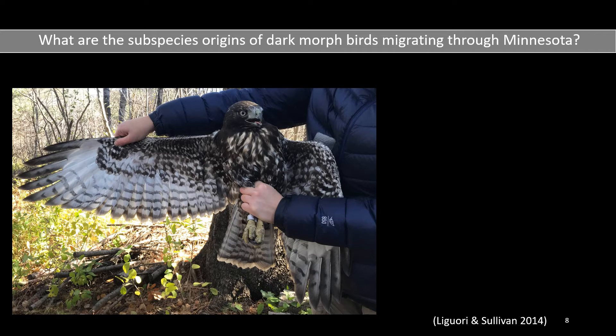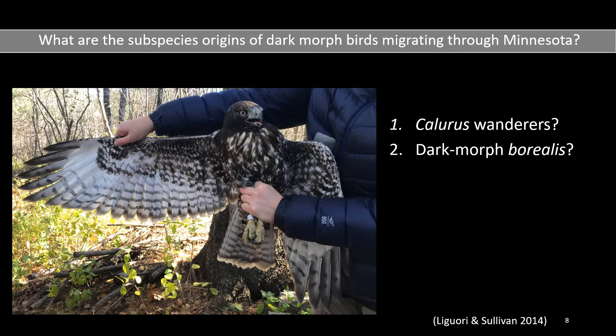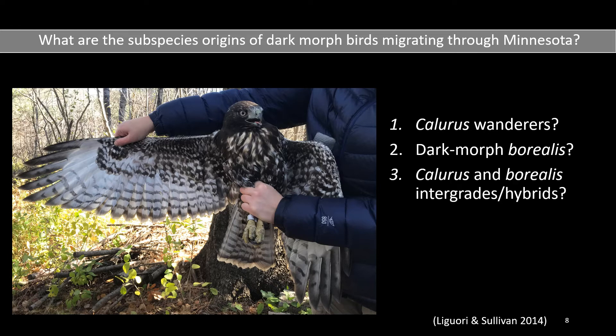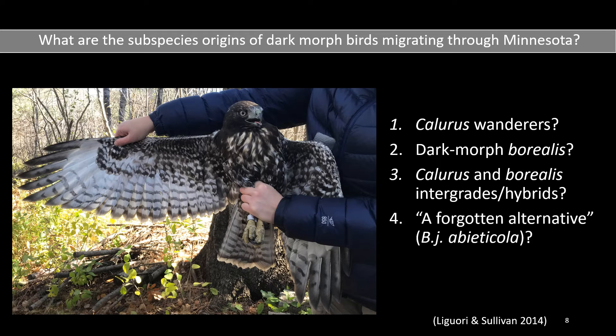According to Liguori and Sullivan, several theories have been posed. The first being that these dark morph birds are Chloris birds moving beyond their primary geographic range. The second being that they are Borealis birds, suggesting the idea that Borealis birds could be polymorphic and occur rarely as dark morphs. The third being that they are intergrades or hybrids of Chloris and Borealis. And the last being that they are sourced from a forgotten alternative, B.J. Abieticola, which I'd like to talk about in more detail.